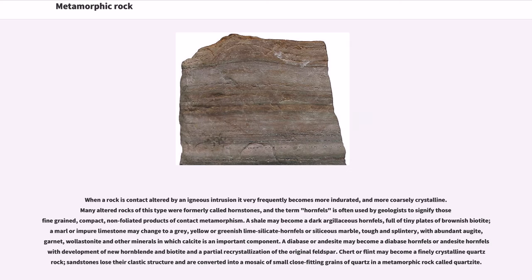When a rock is contact altered by an igneous intrusion it very frequently becomes more indurated and more coarsely crystalline. Many altered rocks of this type were formerly called hornstones, and the term hornfels is often used by geologists to signify this fine-grained, compact, non-foliated product of contact metamorphism. A shale may become a dark argillaceous hornfels full of tiny plates of brownish biotite. A marl or impure limestone may change to a grey, yellow or greenish lime-silicate hornfels or siliceous marble, tough and splintery, with abundant augite, garnet, wollastonite and other minerals. A diabase or andesite may become a diabase hornfels or andesite hornfels with development of new hornblende and biotite in a partial recrystallization of the original feldspar.